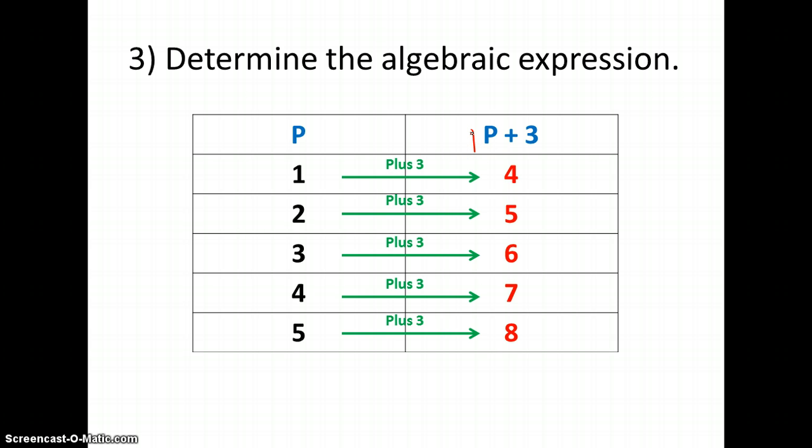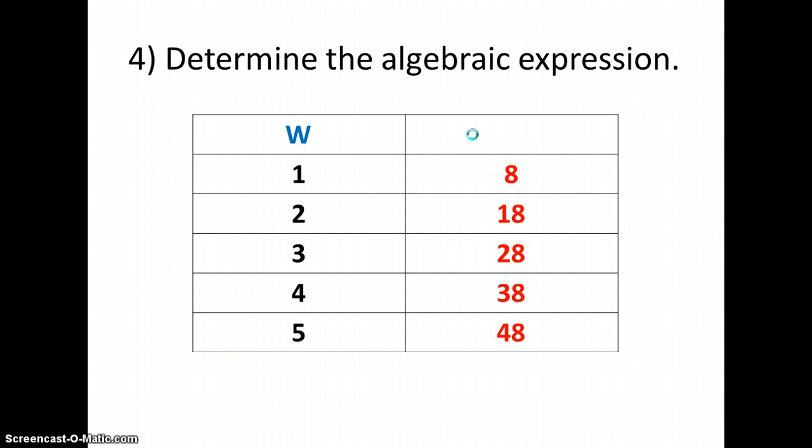Let's look at this one. I notice on the w column that I am increasing by 1 each time. So I'm going to look over here on my right column and notice that I am increasing by 10 each time. So this tells me that I'm going to have a 10 as my coefficient of w, or 10 times w.